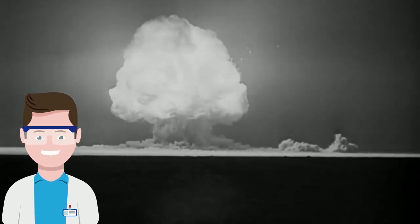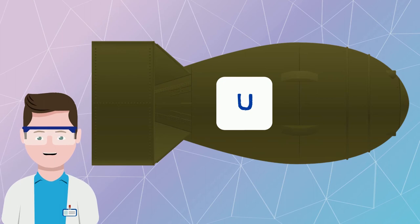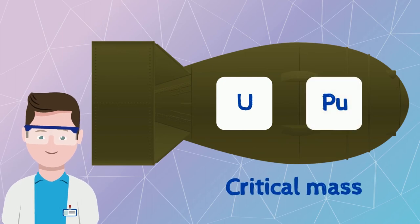But how do fission bombs work? These bombs are separate blocks of uranium or plutonium that can reach the critical mass, the minimum amount of nuclear material needed to maintain the fission, and together with explosives, it can release a massive amount of energy.